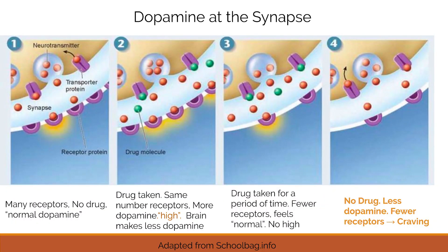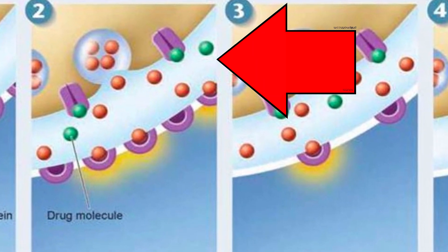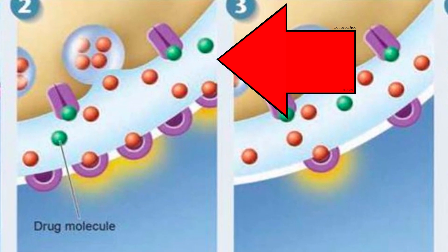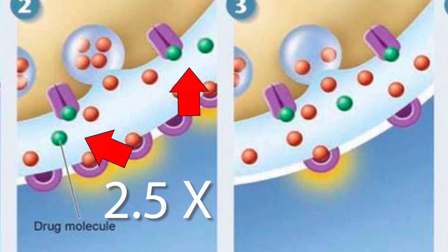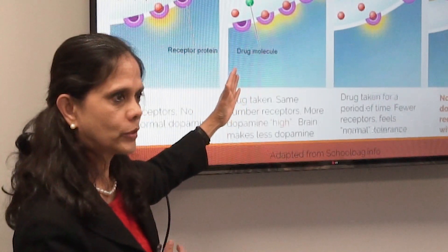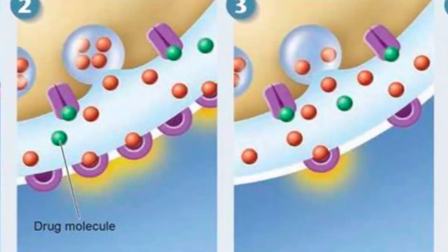When a patient takes cocaine — shown as the green ball — it blocks the reuptake of dopamine. So you have a lot of dopamine in the synapse, represented by two and a half orange glows of signaling. The patient is getting a high — they feel good. As long as the dopamine isn't degraded, it keeps sending signals, pinging over and over, and the high keeps lasting. That only happens initially.